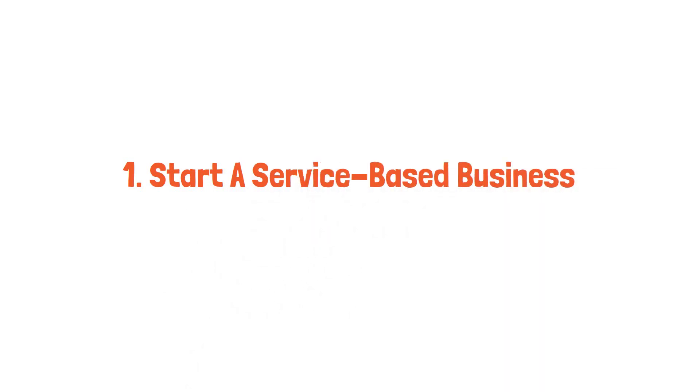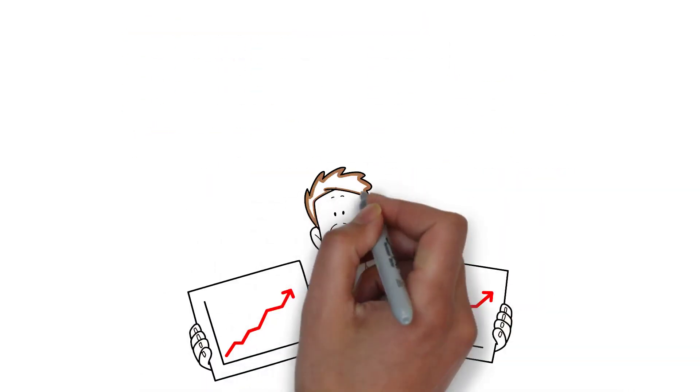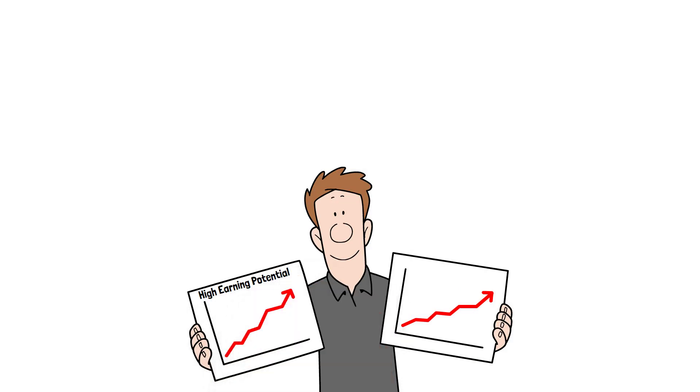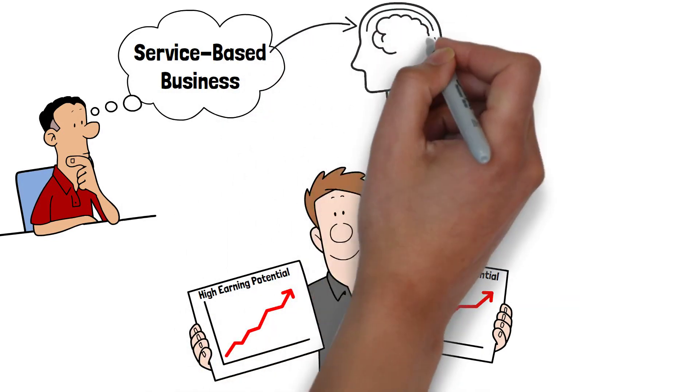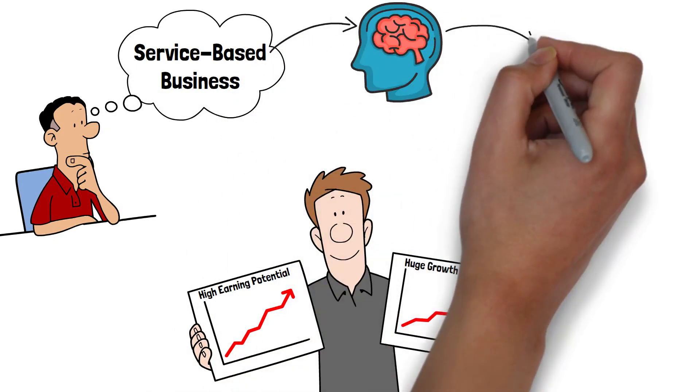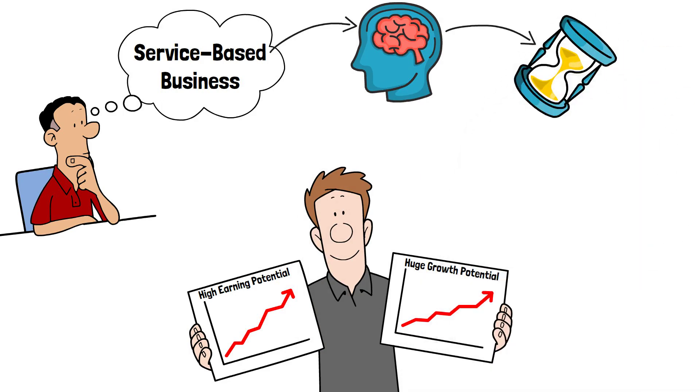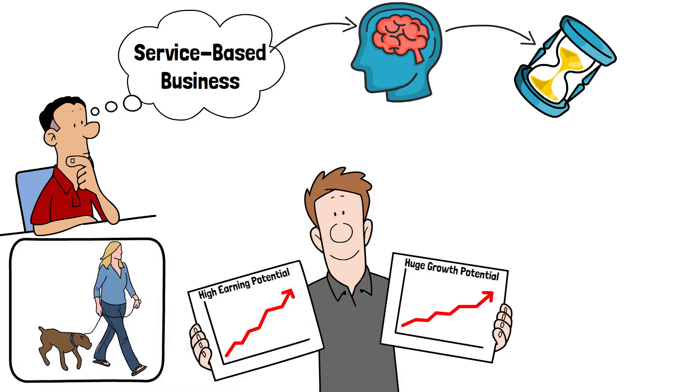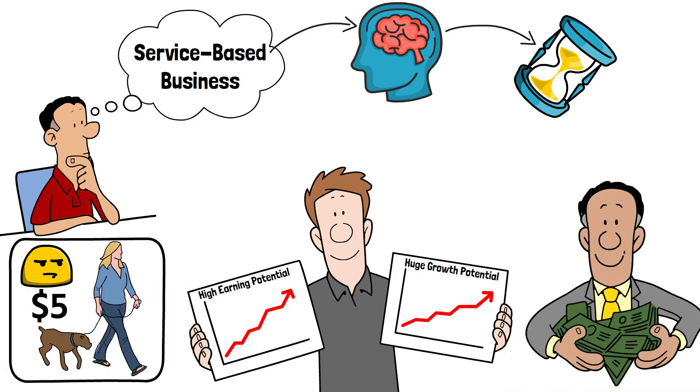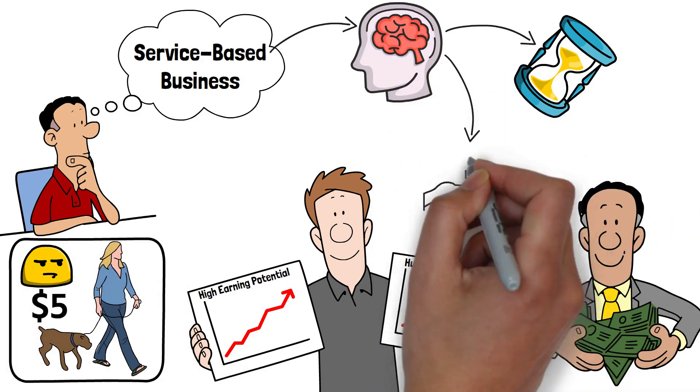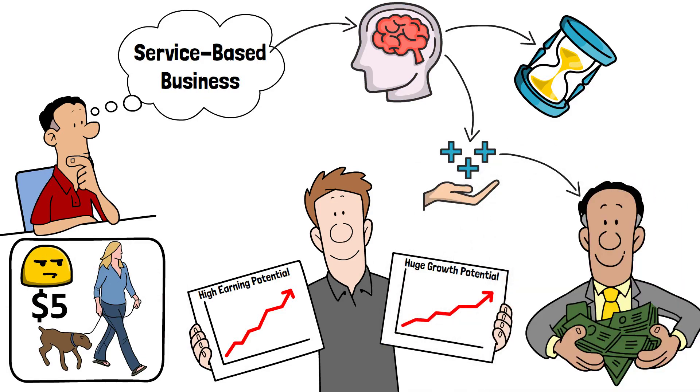One, start a service-based business. The first side hustle we're talking about has not only a high earning potential, but also a huge growth potential. But what do I mean by a service-based business? A service-based business is when you have a skill that, for example, someone else doesn't have, and you offer it for either an hourly rate or a fixed rate. You probably know the old familiar side hustle as a teenager walking other dogs, and for that you got $5, for example. But we don't want to do something for $5, we really want to earn money. So it is important that you offer a skill that brings a high added value, and in return, you get paid very well.